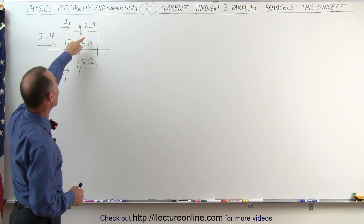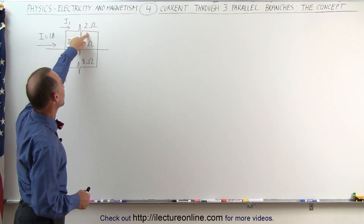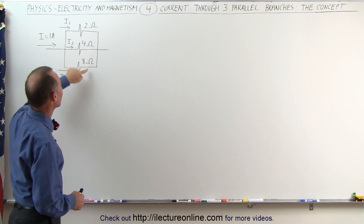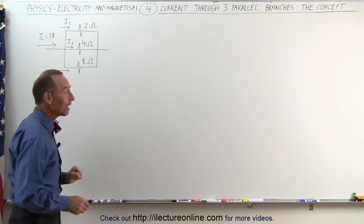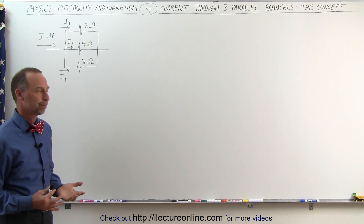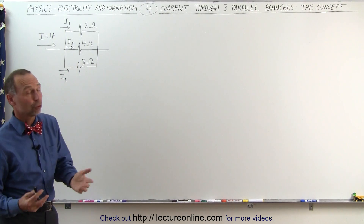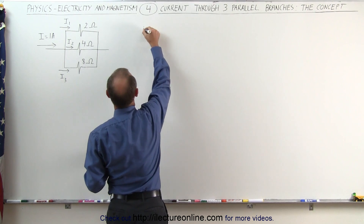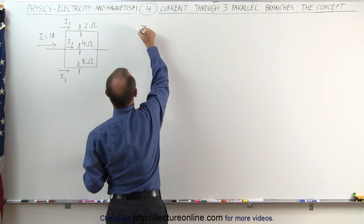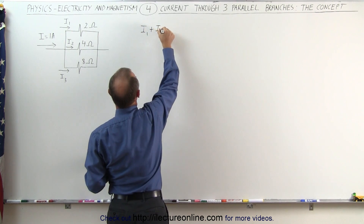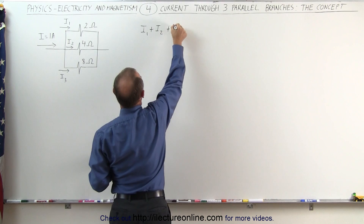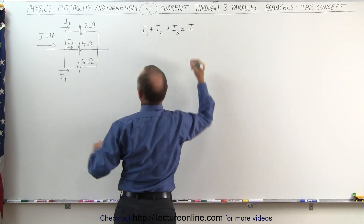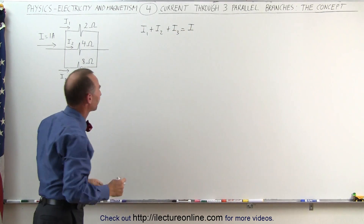Notice that on the top branch we have a 2 ohm resistor, the middle branch we have a 4 ohm resistor, and the bottom branch we have an 8 ohm resistor. We do know that when you add the three currents together — I1 plus I2 plus I3 — that will add up to the total current entering the branch point.